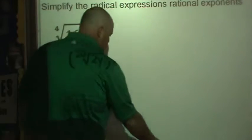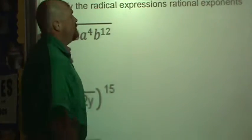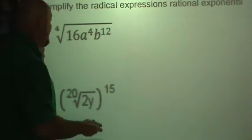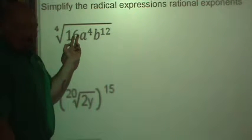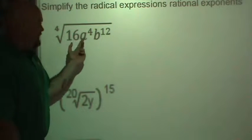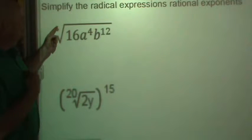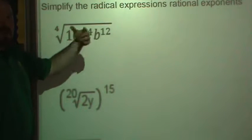Okay, simplifying radical expressions with rational exponents. Let's look at this. Rather than looking for perfect fourths to take the fourth root of, let's take this fourth root and write it as a rational exponent.